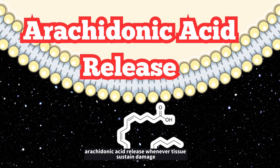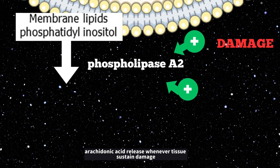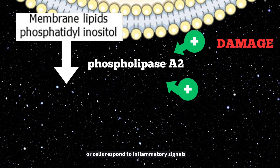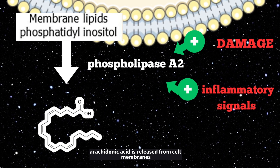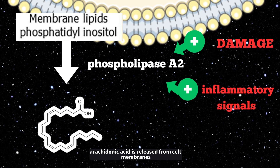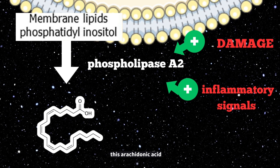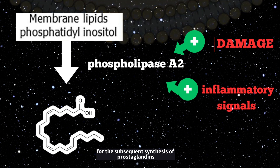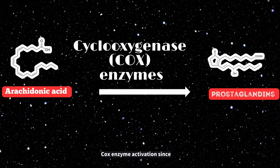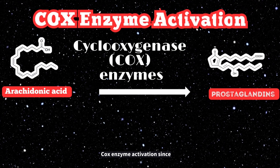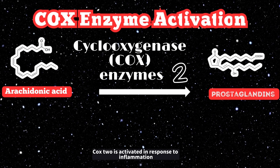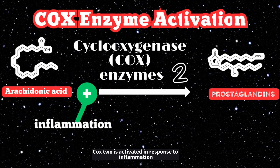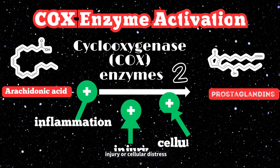Arachidonic acid release: whenever tissue sustains damage or cells respond to inflammatory signals, arachidonic acid is released from cell membranes. This arachidonic acid serves as the fundamental building block for the subsequent synthesis of prostaglandins. COX-2 is activated in response to inflammation, injury, or cellular distress.